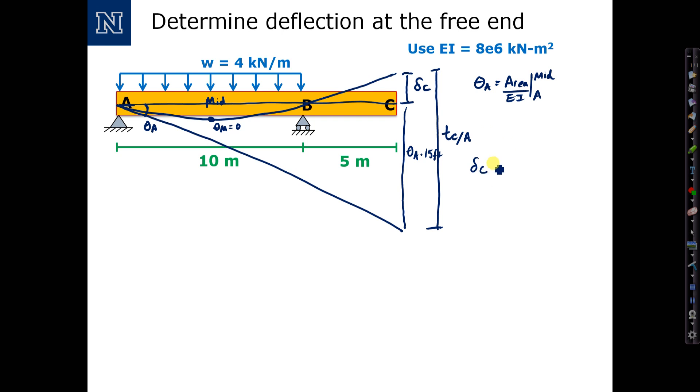And then delta C is equal to T at C with respect to A minus theta A times the 15 feet. So I need to evaluate T at C with respect to A as well as theta A.